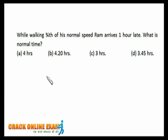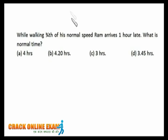Let's see this interesting question: while walking three-fourths of the normal speed, Ram arrives one hour late. What is the normal time to cover that particular distance? The key concept here is that speed is inversely proportional to time — speed equals distance divided by time.